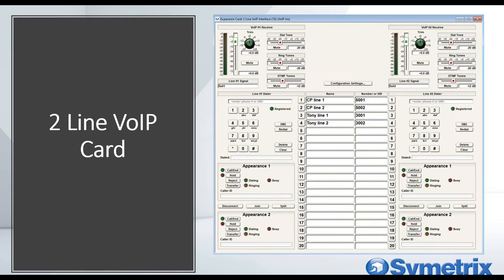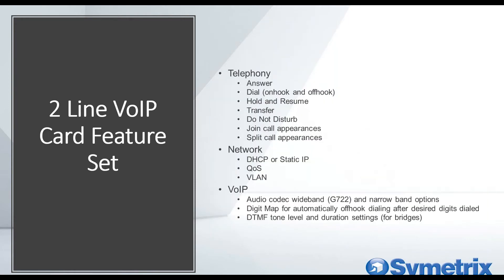Here's what the VoIP interface looks like — very similar to the analog telephone interface card. It has hold, resume, transfer, and do-not-disturb. You can join and split call appearances. It works with DHCP or static IPs, is compatible with QoS or VLANs, features the wideband audio codec G.722 with narrowband options as well. The digit map is customizable for off-hook dialing, and DTMF decoding is also supported.